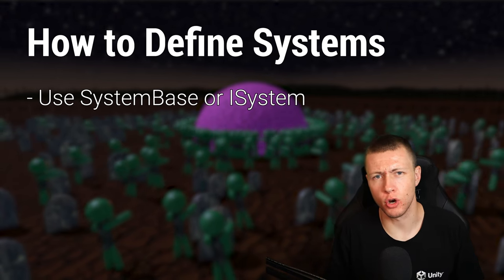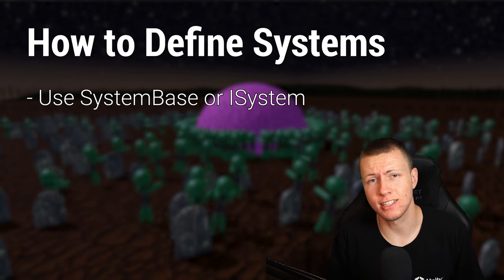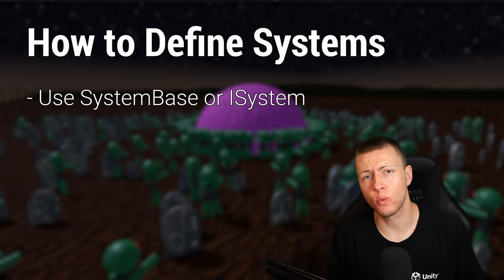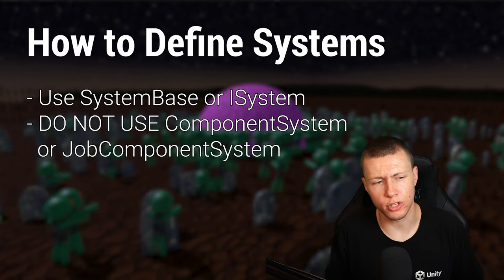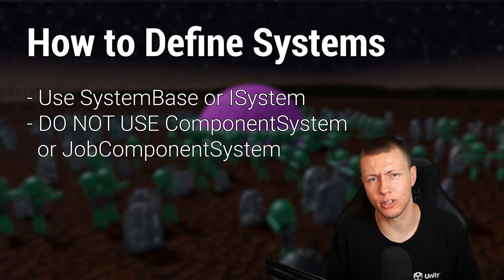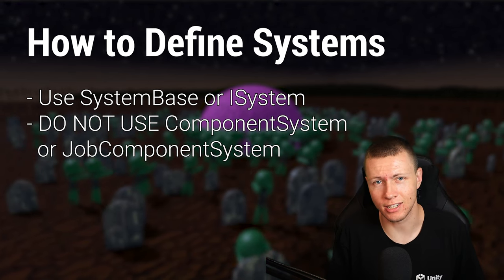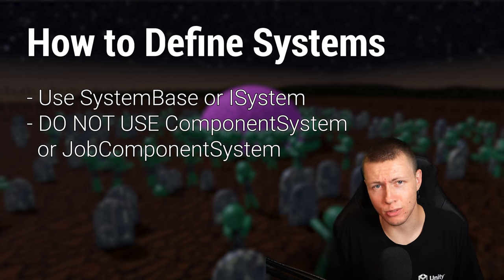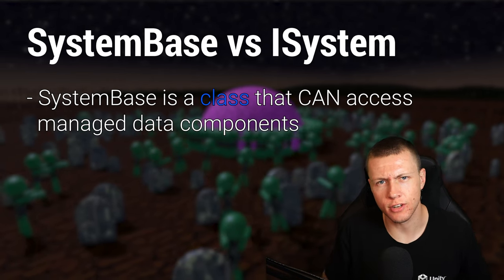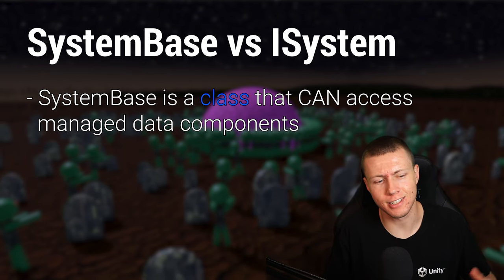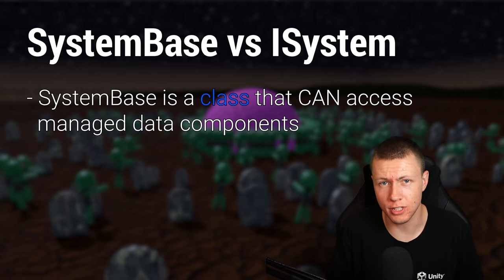There are two ways to define systems in code. One is by using the SystemBase class, and the other is to use the ISystem interface. You may come across older code using ComponentSystem or JobComponentSystem — avoid those, they're very outdated. The only two types of systems you should be using are SystemBase or ISystem.